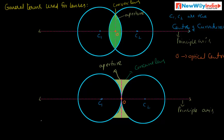Next is principal focus. The principal focus is a point on the principal axis. For a convex lens, when a parallel beam of light strikes the lens, after refraction the rays meet at this point — this point is called the principal focus, denoted F1 and F2. For a concave lens, after refraction the rays diverge and appear to come from a single point — this point is also called the principal focus.